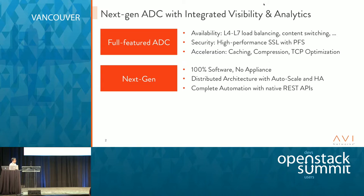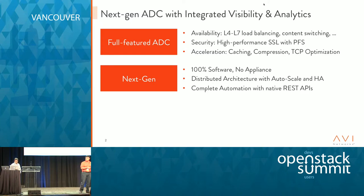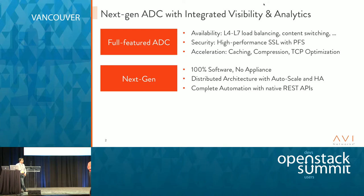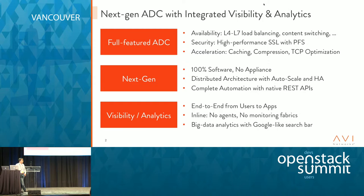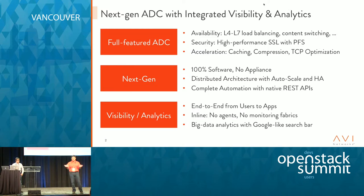What's next-gen about our solution? First of all, it's 100% software, no appliance. It's the industry's first distributed architecture with automatic scale-out, HA, and a single point of control and management with full REST API-based integration. And we are beyond ADC — we call it BADASS: Beyond Application Delivery as a Service. We do visibility and analytics with no agents, no monitoring fabrics, all inline, end-to-end visibility from users to applications and everything in between.